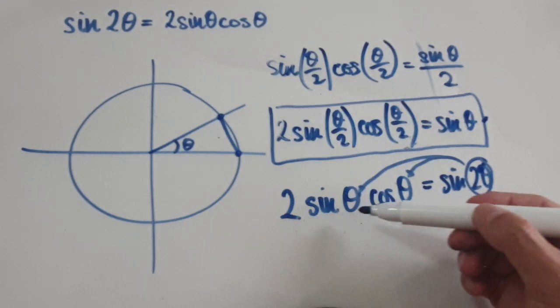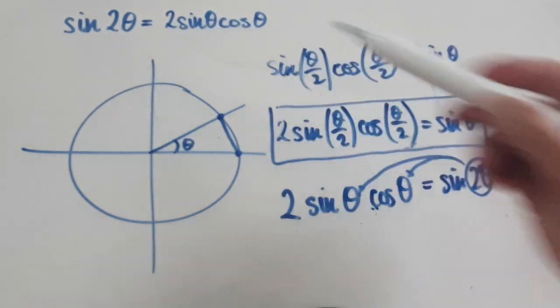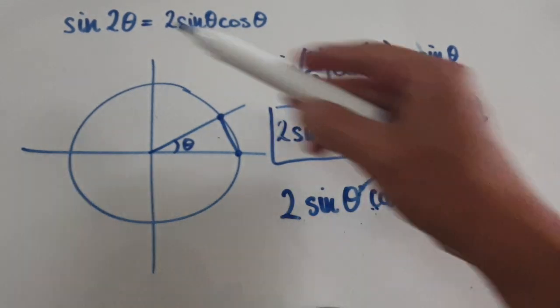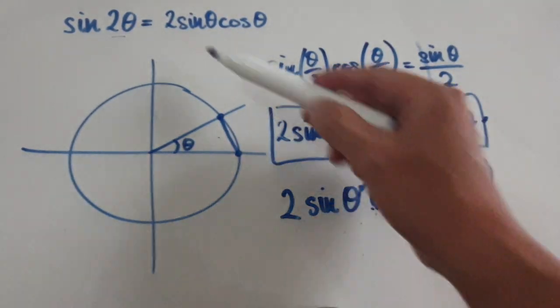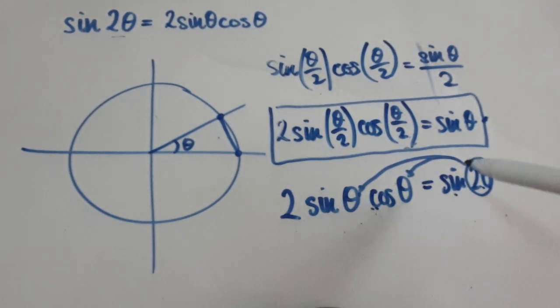This is exactly the same as the standard double angle identity: sine(2θ) equals 2·sine(θ)·cos(θ). And that's where it comes from.